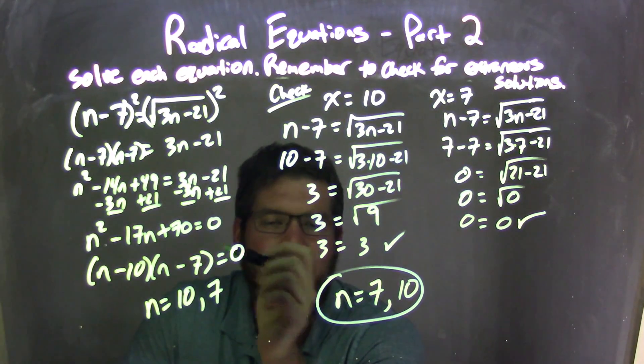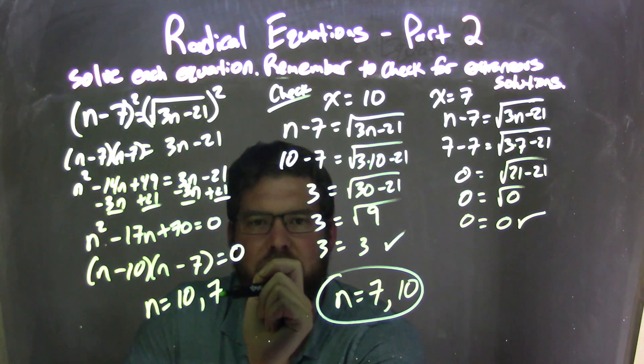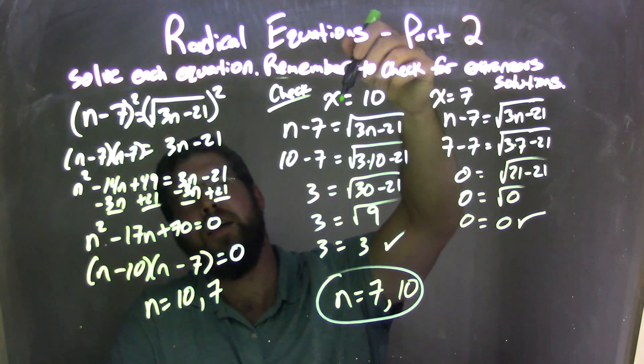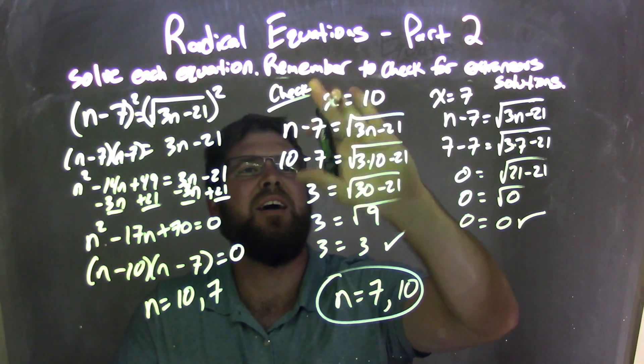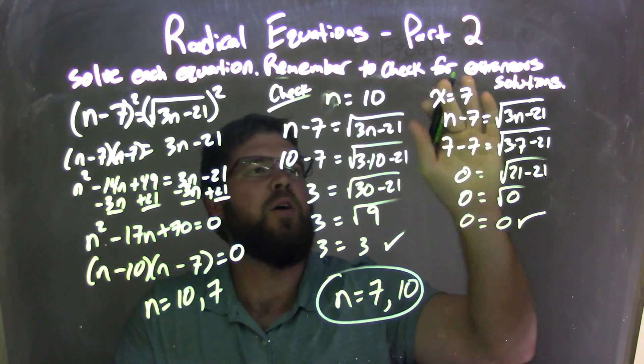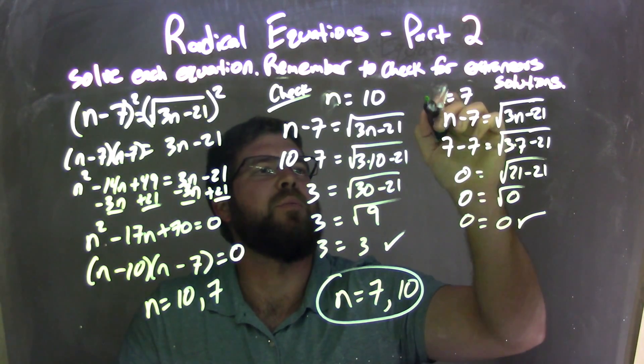And that was equal to 0. Solved each one individually equal to 0, giving me n equals 10 and 7. Checked first here 10 for extraneous, x equals 10. X? What am I doing with these x's? I can't believe I made that mistake. Hopefully if you see any more mistakes, put it in the comment section below.